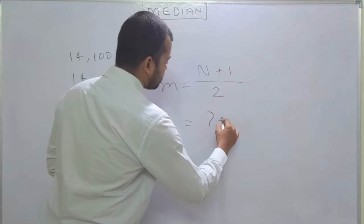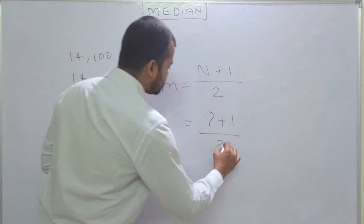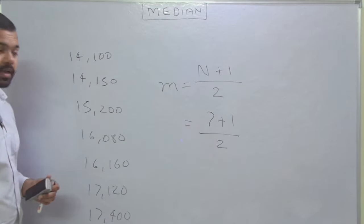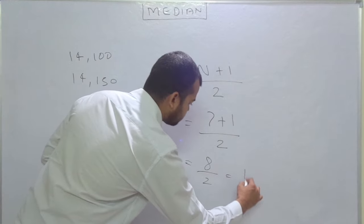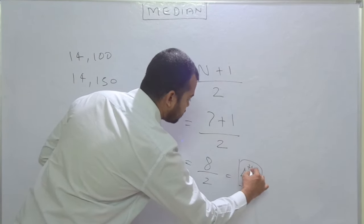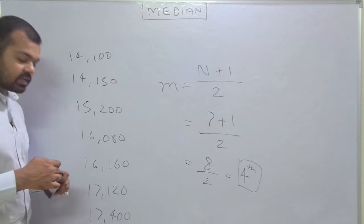First of all, you have to calculate 7+1 divided by 2. It's a very simple method. Here the answer comes out as 8/2, which is 4. It means the fourth value is your median class.